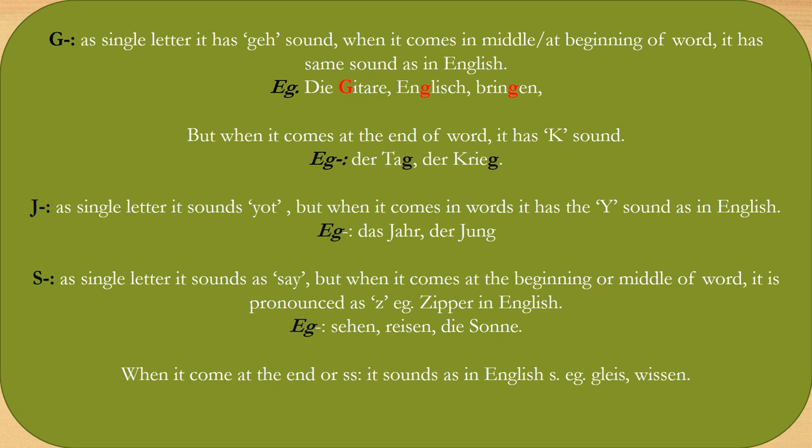Now let's see how J is pronounced. As a single letter in German, it has the 'Jot' sound. But when it comes in words, it has the Y sound as in English. For example: Jahr, jung.